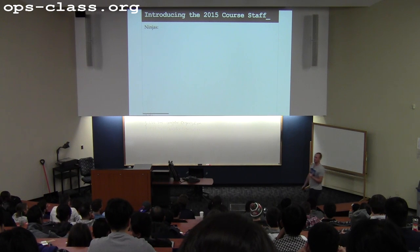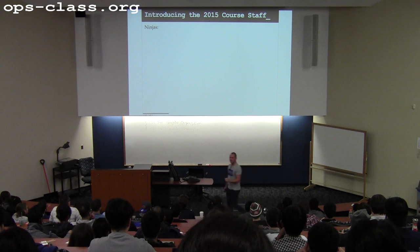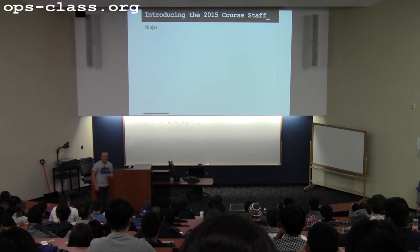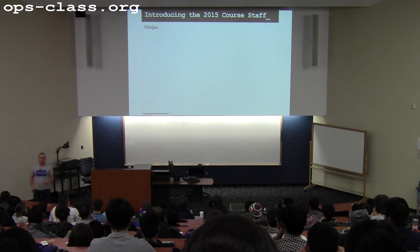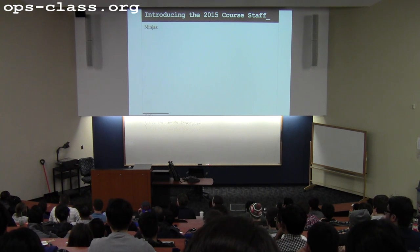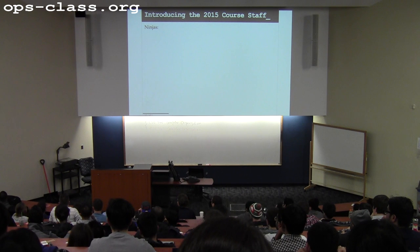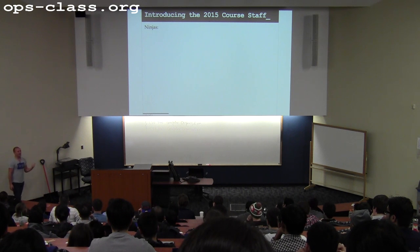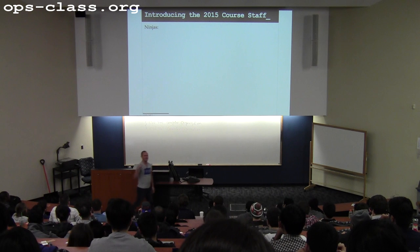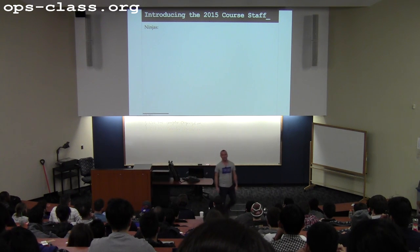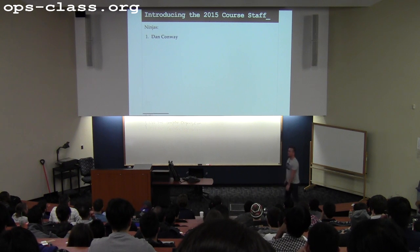We also have what we refer to as ninjas. The ninjas this year are all undergraduates who took the class last year. My algorithm for choosing ninjas is that I get out the grade book from last year, sort it by grade, start at the top, and send emails until I get as many ninjas as I want.